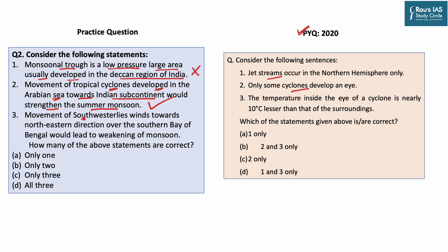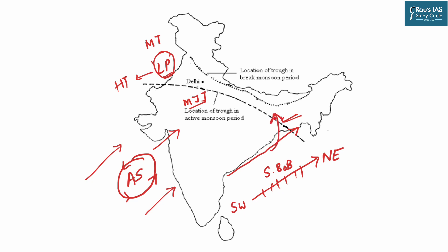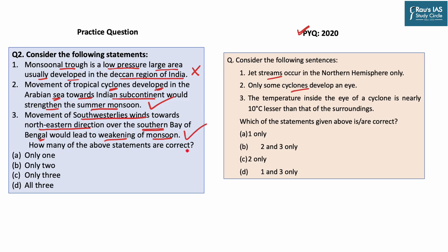The third statement says that movement of southwesterly winds towards the north-eastern direction over the southern Bay of Bengal — please go through the map again. When these winds are moving in that direction and not parallel to the Indian coast, it is easy to understand that these winds are going to weaken the Indian monsoon because they are not even entering the Indian subcontinent. If the winds go along with the coast, they are most likely to enter the subcontinent and the first region to receive rainfall would be northeast India. So this statement is correct.